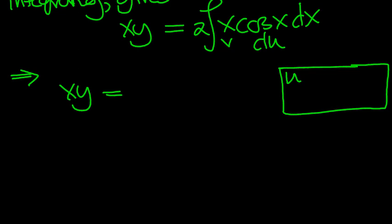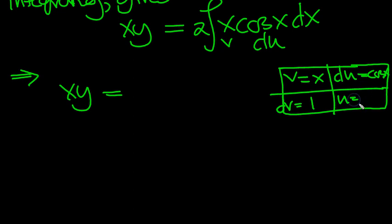There's v, which equals x. And du is equal to cos. So dv equals 1, and u will equal the integral of cos, sin. There we go. That's everything we need.